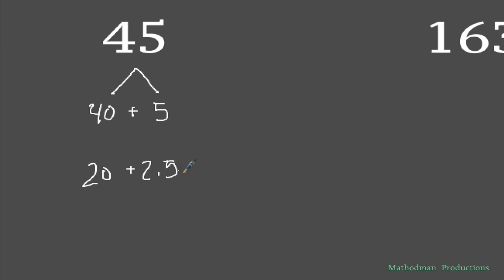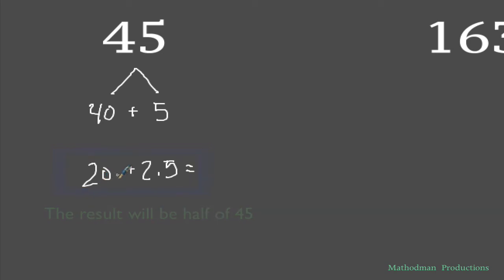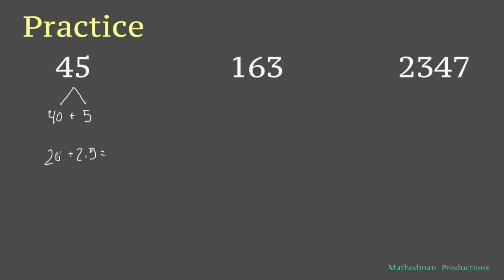This is what's going on in my head. Now if you can add in your head really well, then you have just divided 45 by 2 in your head — 20 plus 2.5 is 22.5.